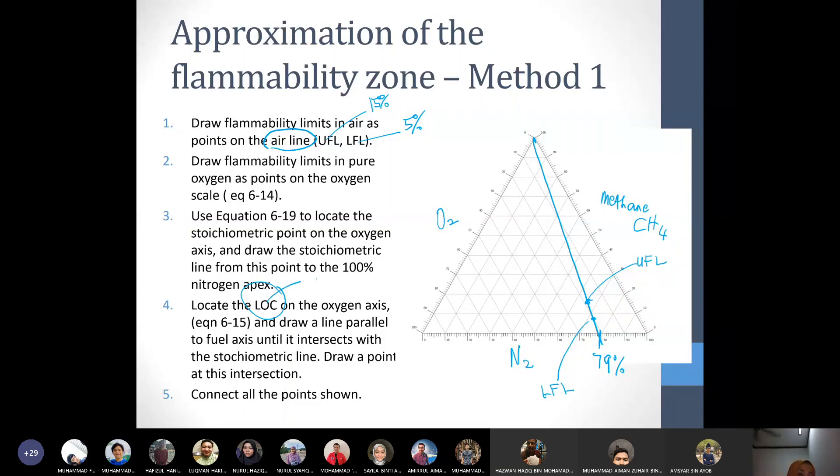So LOC is Z times LFL. The LFL is 5 percent. What's the Z for methane? CH4 plus oxygen gives CO2 plus water. Let's balance this: you get 2 oxygen, so CH4 plus 2O2. Then there's 4 hydrogen and then 2 here. It's balanced.